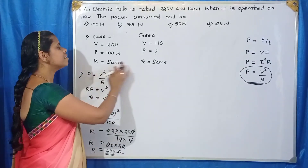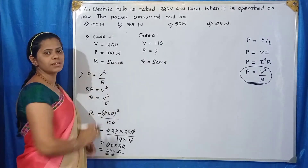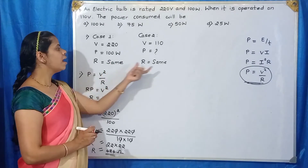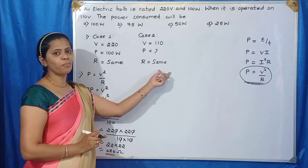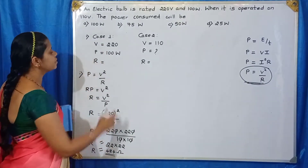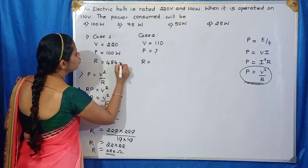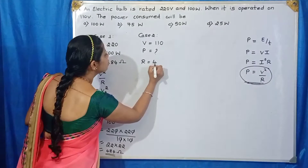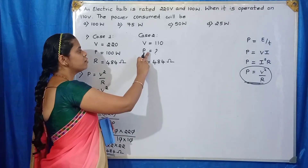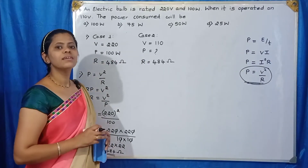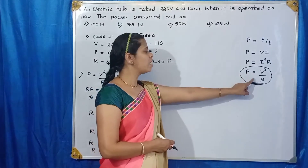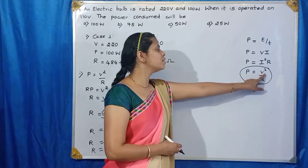We know resistance remains the same in both cases, so here also resistance is 484 Ω. We have to find out the power consumption in case two. Since voltage V and resistance R are both given, we use the formula P = V²/R.